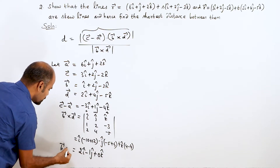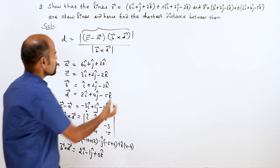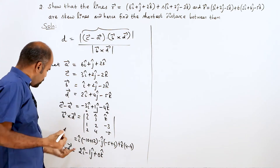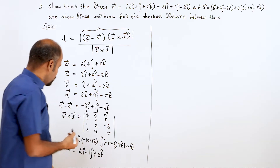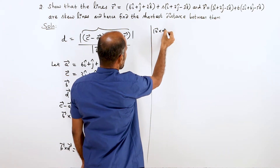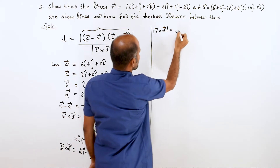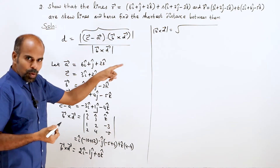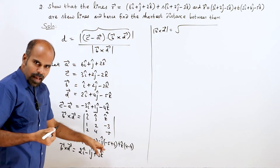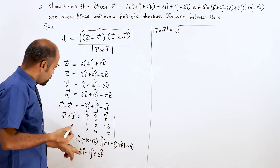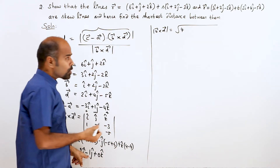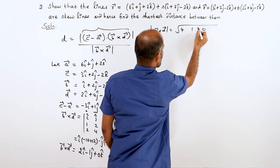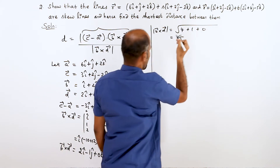Now the denominator is the magnitude of b vector cross d vector. The magnitude equals root over the sum of squares of the coefficients of i cap, j cap, k cap: 2 squared = 4, minus 1 squared = 1, 0 squared = 0. So magnitude equals root over 4 plus 1 plus 0, which equals root 5.